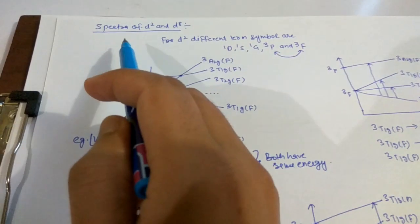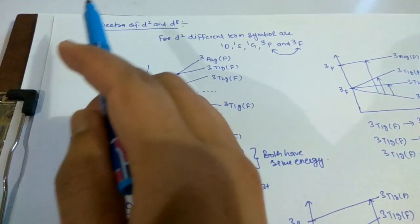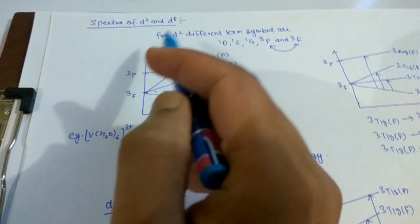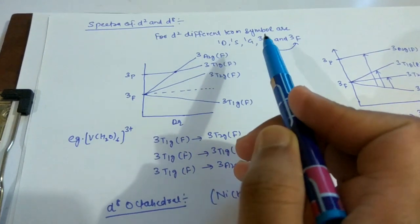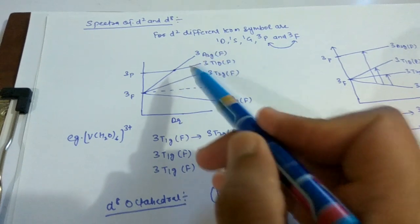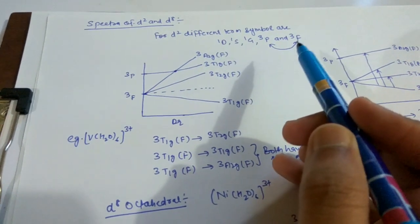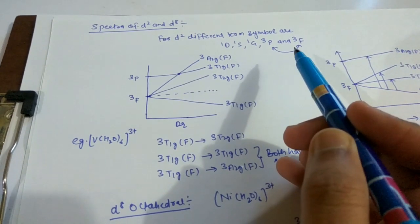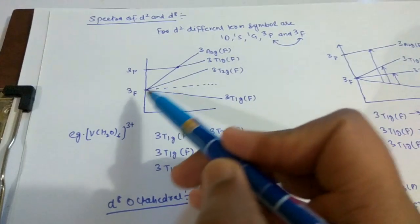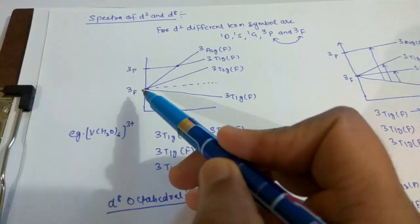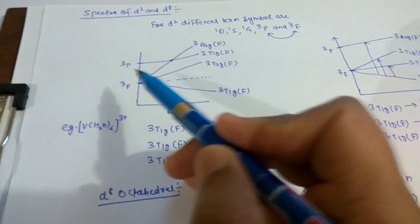We will see spectra and the Orgel diagram for d² and d⁸. For d², we have to write different types of term symbols: ¹D, ¹S, ¹G, ³P, and ³F. Transition takes place from ³F to ³P orbitals. The ³F state splits into ³T₁g, ³T₂g, and ³A₂g.